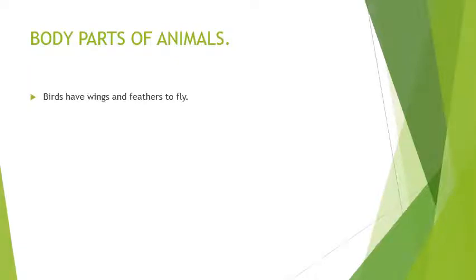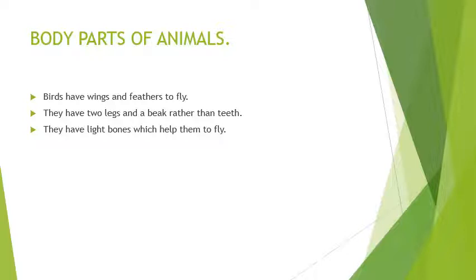Like birds, birds have wings and feathers to fly. So birds have wings and feathers to fly. When the birds fly, these wings and feathers help them to fly. They have two legs and a beak rather than teeth. Birds have two legs and they have a beak which helps them to eat the grains. And the birds do not have teeth. They have light bones which help them to fly. Birds are having light bones because of which they are able to fly easily.